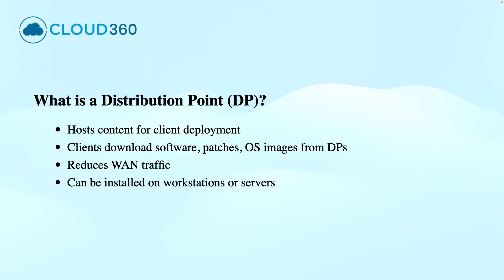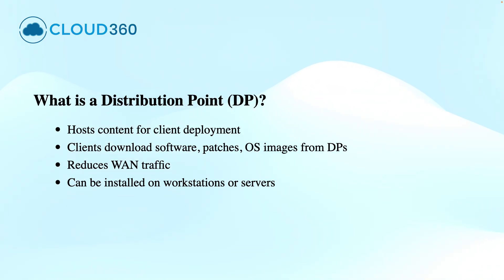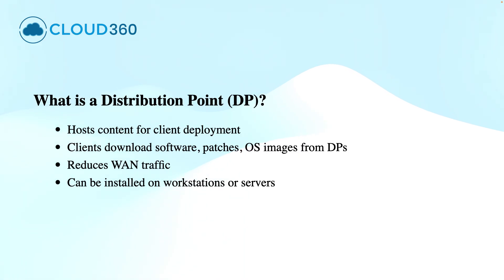The first thing first — what is a distribution point? A distribution point is a site system role in Configuration Manager that stores the files required for software deployment. Applications, updates, or operating system images are distributed through distribution points. Clients connect to distribution points to download the content, which helps reduce WAN traffic and speed up deployment time.